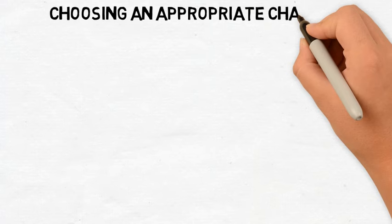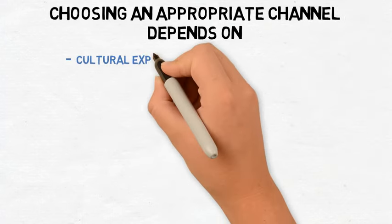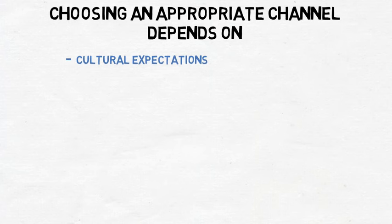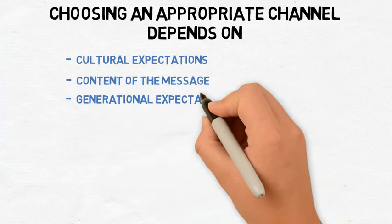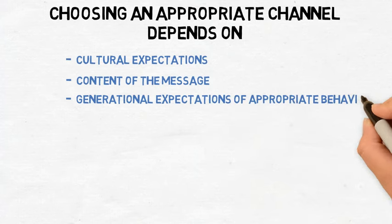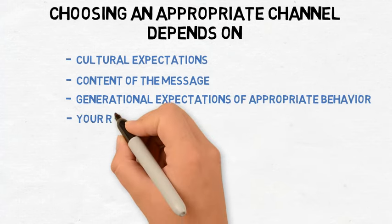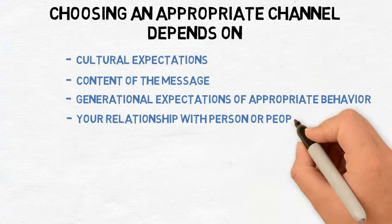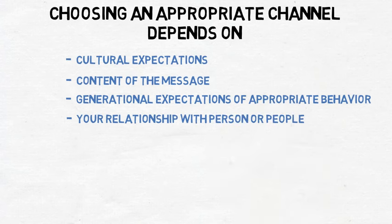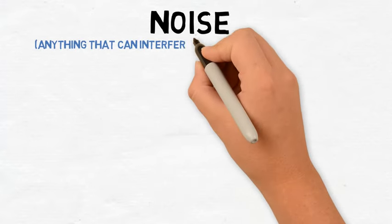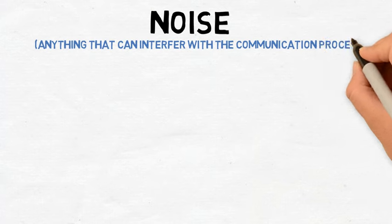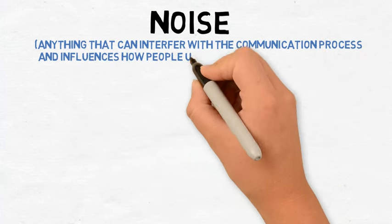Choosing the appropriate channel depends on many factors including, but not limited to, cultural expectations for communication behavior, the content of the message being sent, generational expectations of appropriate behavior for the situation at hand, and your relationship with the person or people with whom you communicate. Another element that can influence the communication process is noise. In communication models, noise is anything that can interfere with the communication process and influences how people understand each other.